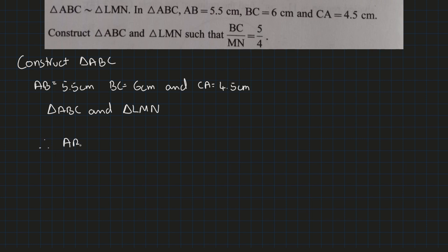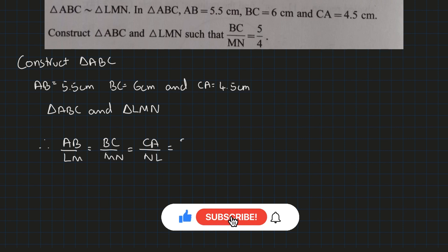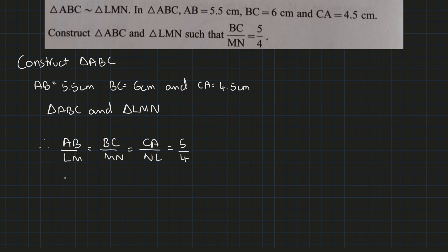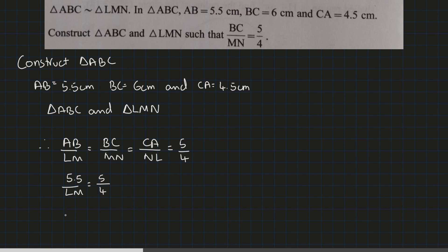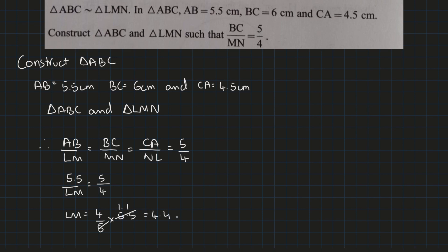So we can write AB upon LM is equal to BC upon MN is equal to AC upon LN. Note that we have been given the ratio of BC upon MN which is equal to 5 upon 4. We take each ratio and substitute the value of AB, BC, and CA. Cross multiplying, we get 4 upon 5 into 5.5, which gives us 4.4. So the side LM is equal to 4.4 centimeters.